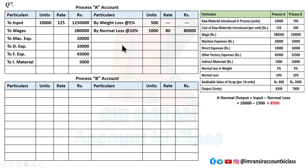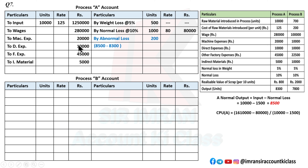Abnormal loss goes on the debit side. The difference is 200 units. To find the rate, use the formula: total debit minus normal loss credit, divided by input units minus normal loss units. That is: (1,61,000 - 80,000) divided by (10,000 - 1,500) = 1,53,850 ÷ 8,500 = ₹180 per unit. So abnormal loss = 200 × 180 = ₹36,000.